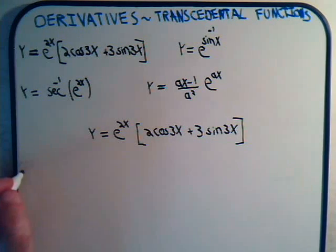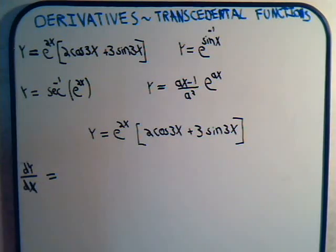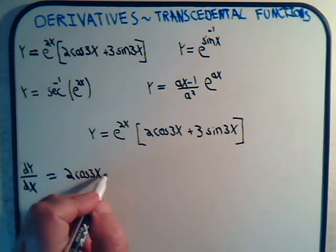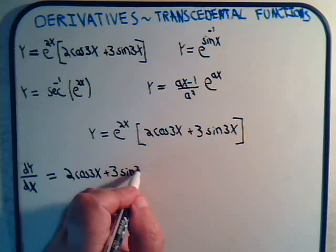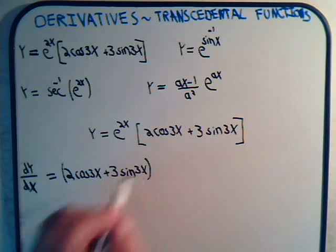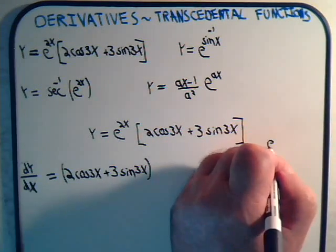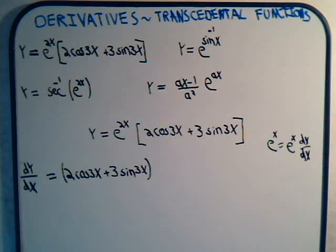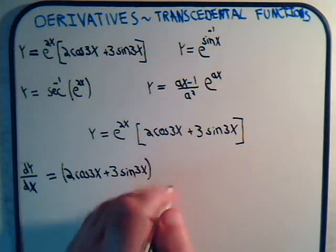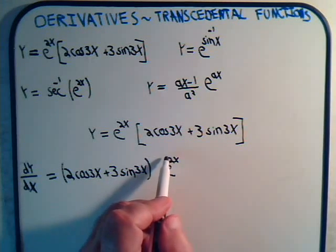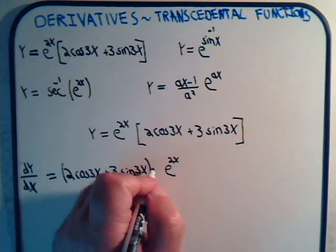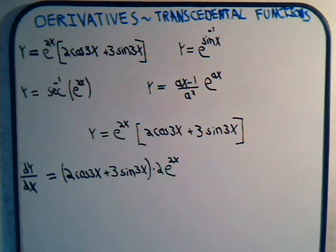So dy/dx will equal: holding the parenthetical expression constant — that's 2 times the cosine of 3x plus 3 times the sine of 3x — times the derivative of e to the 2x. The derivative of e to the x is just e to the x, so here it's going to be e to the 2x times the derivative of 2x, which is just 2. So this first term becomes 2 times e to the 2x times the quantity in parentheses.